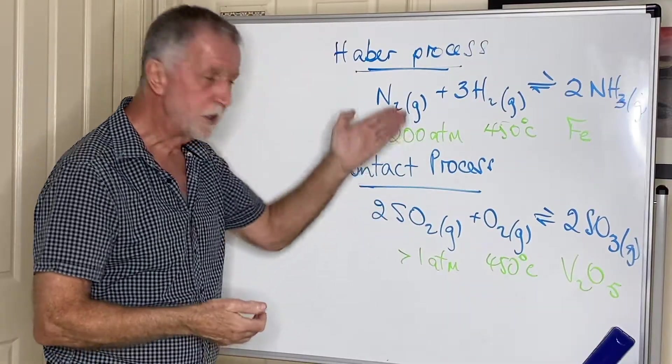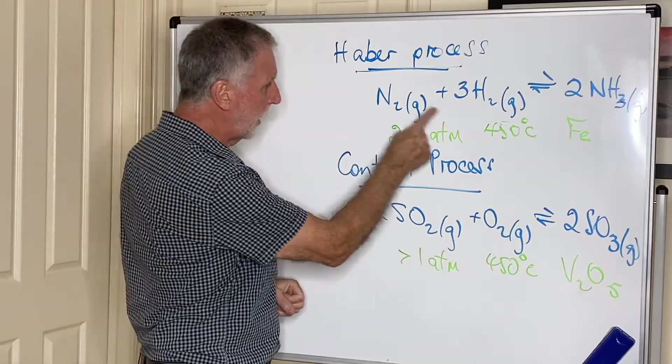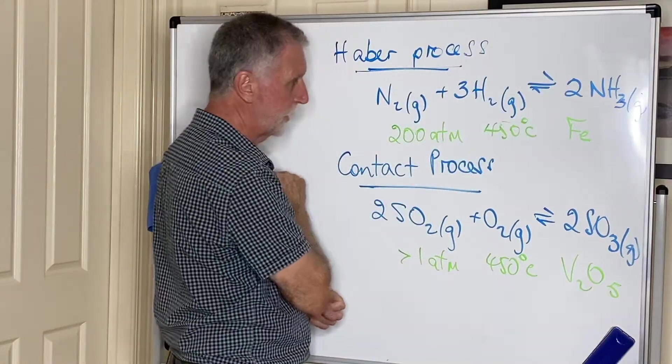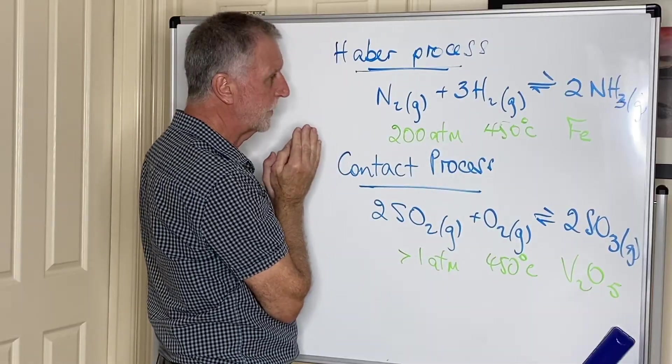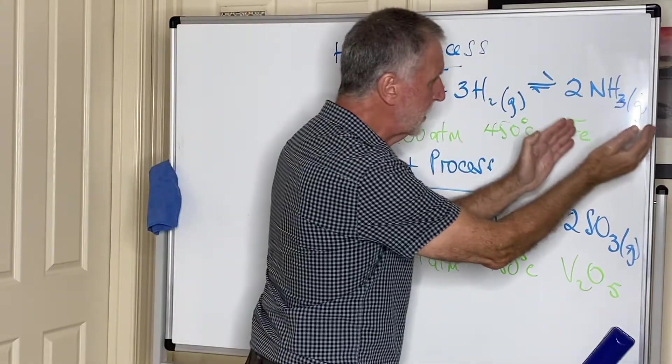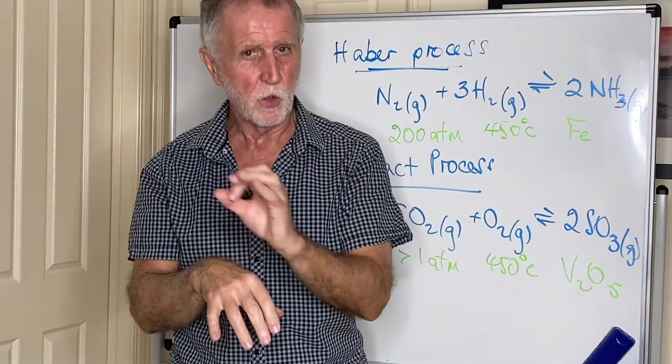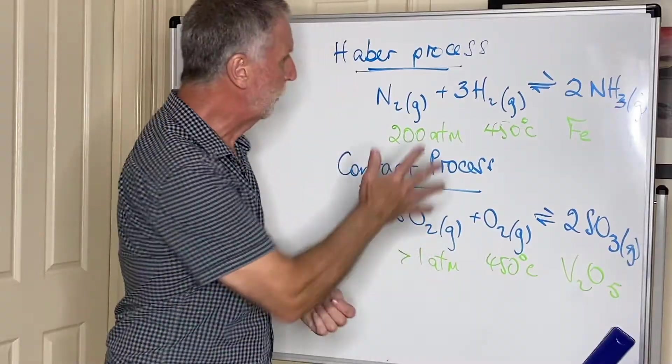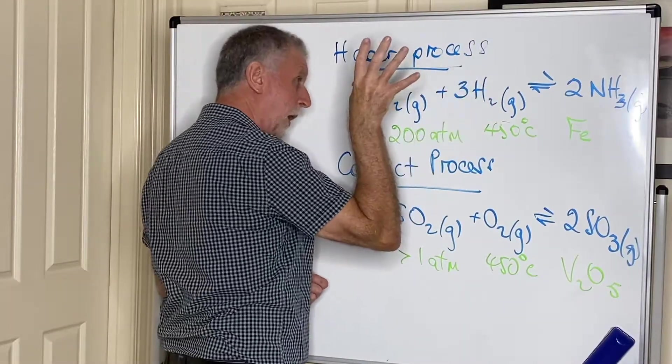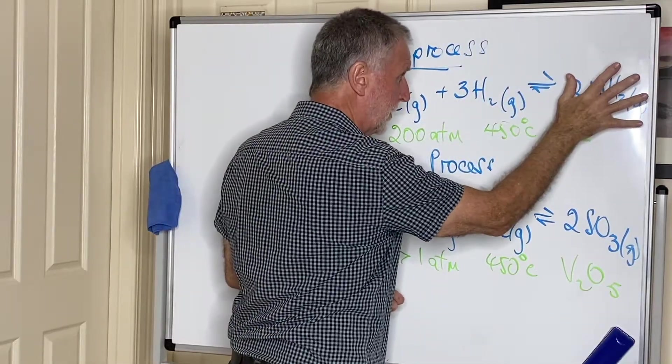You will definitely need to understand why these conditions are being used. Firstly, why do we use a high pressure in the Haber process? Well, you can see that on the left-hand side there are four lots of gas, on the right-hand side two lots of gas. It doesn't matter what the chemical nature of the gas is, it just needs to be gas. So four lots of gas is going to occupy a lot more volume and exert a lot more pressure than two lots of gas.